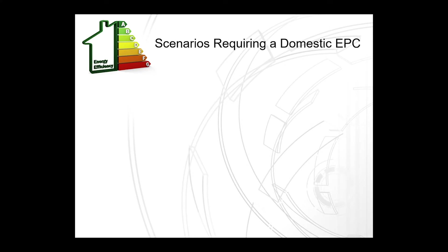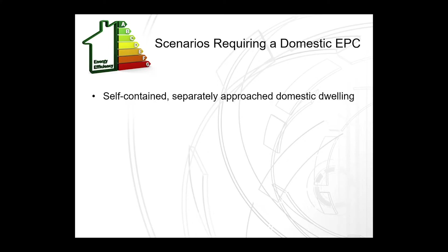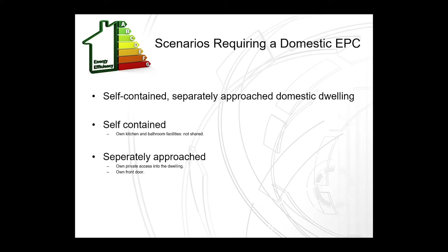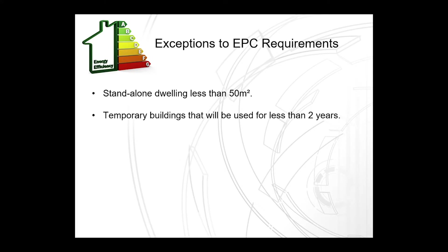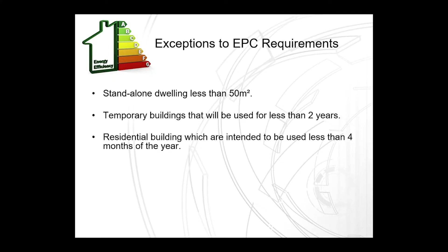In what scenarios is a domestic EPC required? A domestic EPC is required for any self-contained, separately approached domestic dwelling. Self-contained meaning a property with its own kitchen and bathroom facilities which are not shared. Separately approached meaning a property with its own private access into the dwelling or its own front door. There are some exceptions to EPC requirements, including standalone dwellings with a footprint less than 50 metres squared, and temporary buildings that will be used for less than two years.